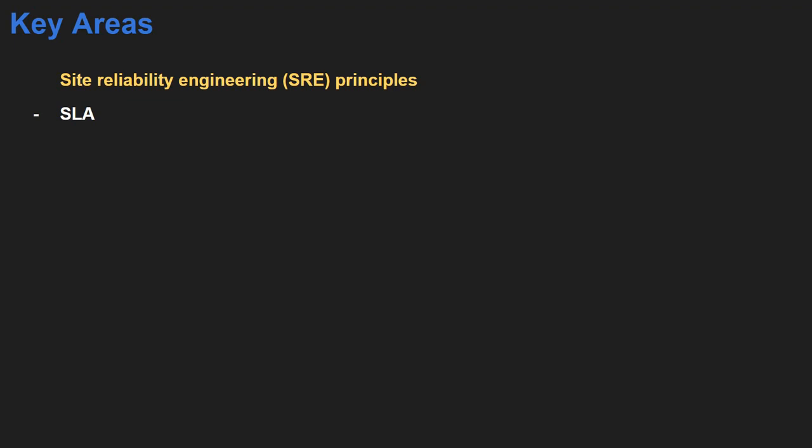SLA is an agreement between the service provider and the person using that service. All cloud providers publish their SLAs — you can visit their site and check them. They typically mention SLAs like 99.99% or 99.999% uptime. If the provider misses that SLA, they have to pay a penalty or compensation to the user. Then we have the concept of SLO — it is not an agreement but a target set internally for that service.